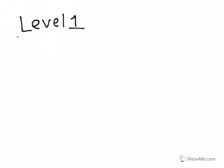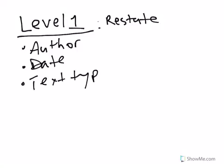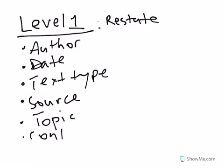Just to give an overview, level one means to restate what's happening, what's the topic in the article. Information that should be covered in a level one response should be: author if that information is available, date if that information is available, text type if you know it's a newspaper article, source if that information is available, and what is the topic and the content.